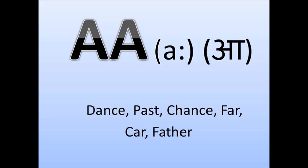For the word 'dance,' some people say 'dance' and some say 'dance.' We can speak it as 'dance' or 'dance.' The British pronunciation is 'dance.' Similarly, 'far' — in British English the R at the end is not pronounced strongly, so we say 'faa.' Then 'car' and 'father' follow the same pattern. Now let's move to the next sound.